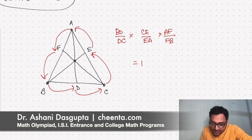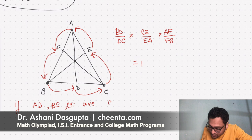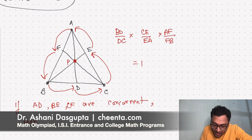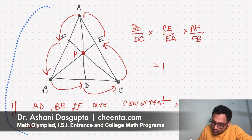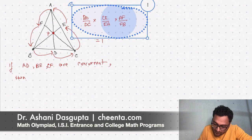So it says that if AD, BE, CF are concurrent, that is they pass through the same point, let's call this point P, then we have this particular condition. Okay, maybe I can just make this a little bit smaller. Okay. And let's put this here. Then we have this condition.